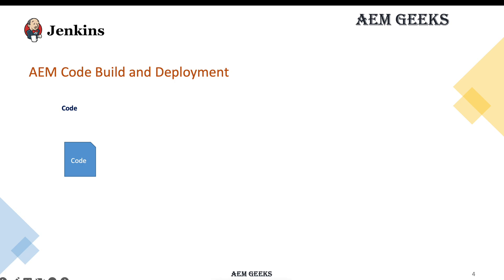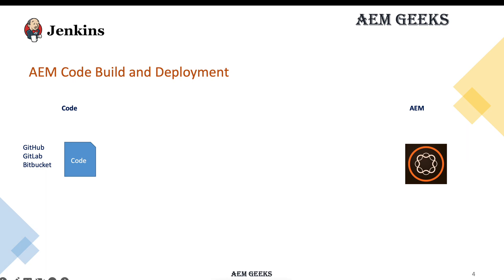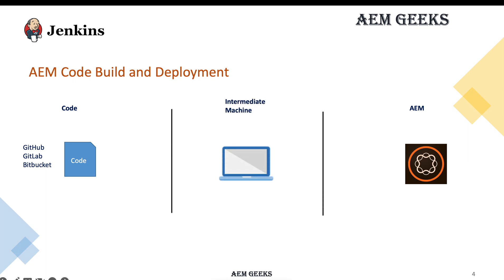To understand this, let's take a scenario. Your code is in GitHub or any other repository on the cloud, and your AEM is on a different machine — a different server. You cannot build your code on GitHub and straightaway deploy it. So what you need is to assign a developer or a person with their own machine. You clone the repository, get the code from the cloud repo, build it on that machine, and then deploy it to AEM.